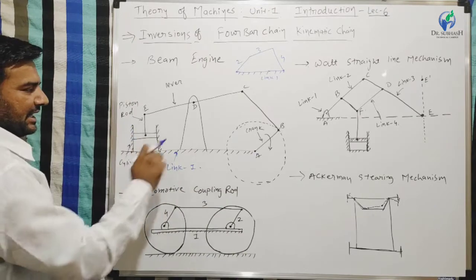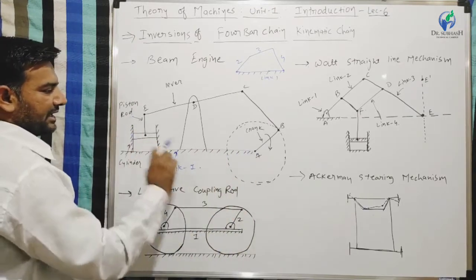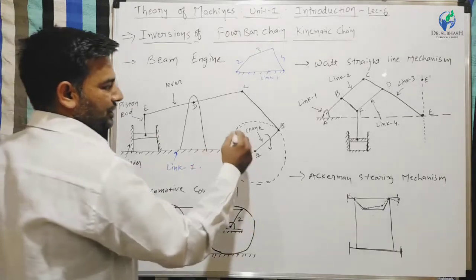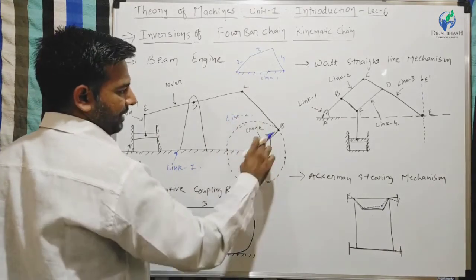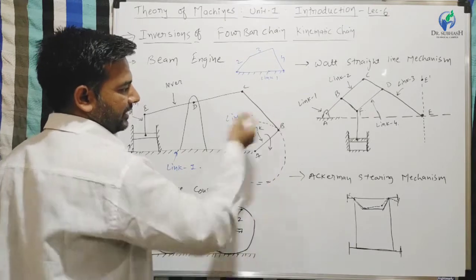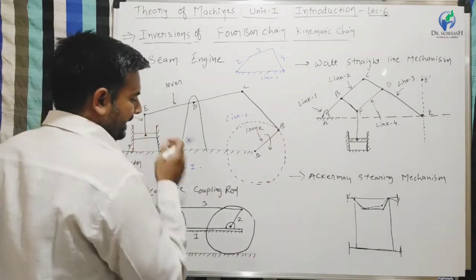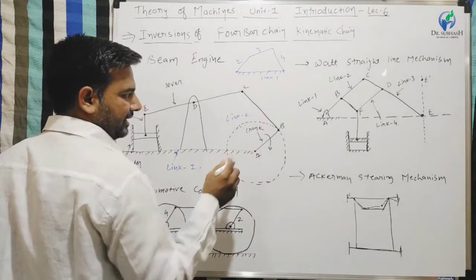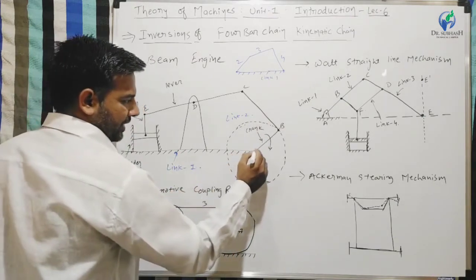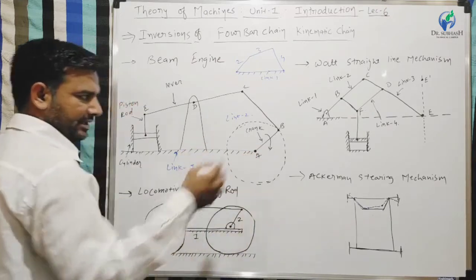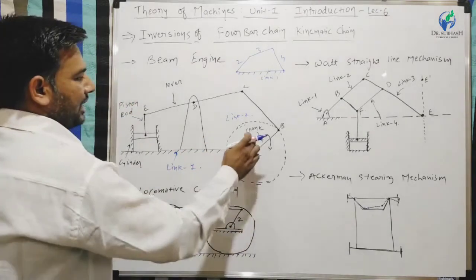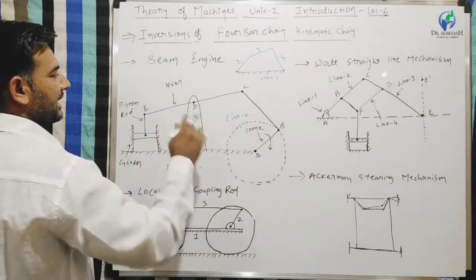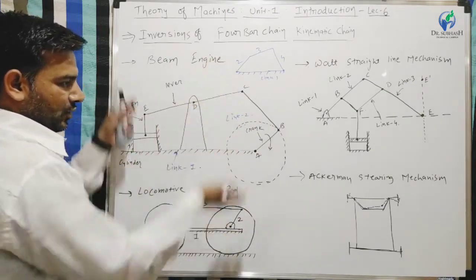Link 1 is a fixed link. Link 2 is a crank, which rotates — the relation is a turning pair, which turns. Link 2 is a lever, which oscillates.